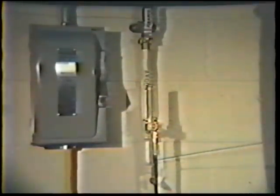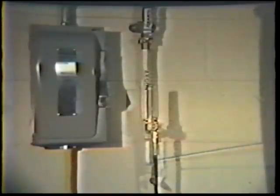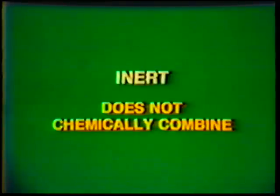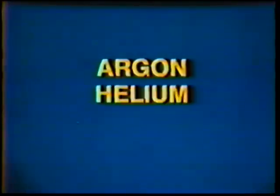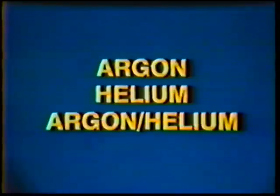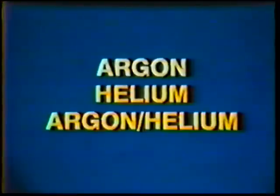The shielding gases used with the gas tungsten arc process are normally inert, meaning the gas cannot combine chemically with other elements to form compounds. Argon, helium, or a mixture of the two gases is used. Argon is more popular since it is less expensive.